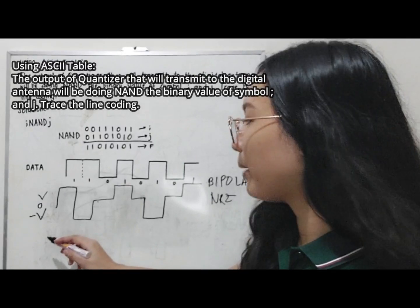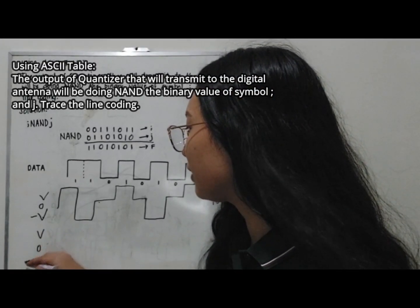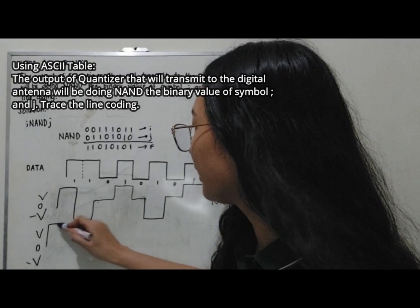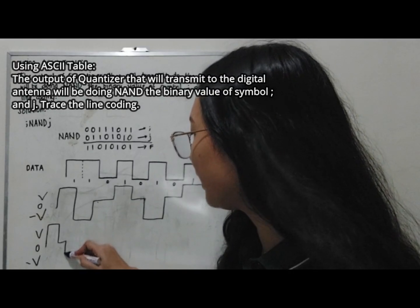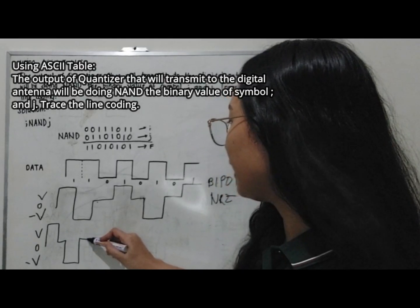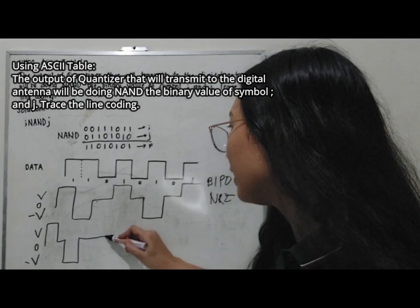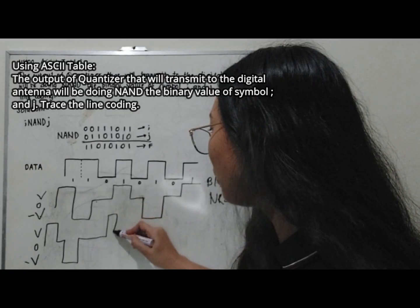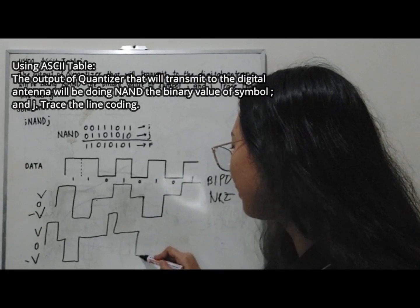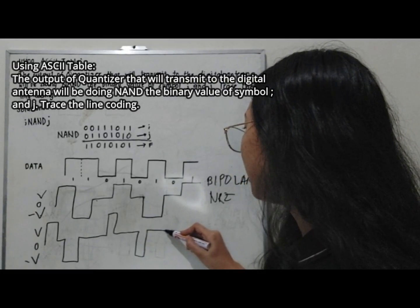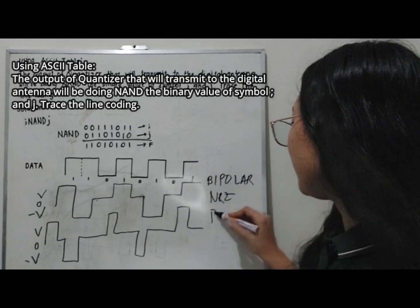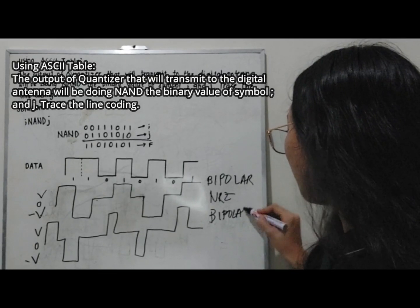For the bipolar RZ, each 1 is a half-bit pulse — alternating between positive and negative — returning to zero, and each 0 stays at zero. So we have: positive half bit back to zero, negative half bit back to zero, zero, positive half bit back to zero, negative half bit back to zero, positive half bit back to zero. This is the bipolar RZ waveform.